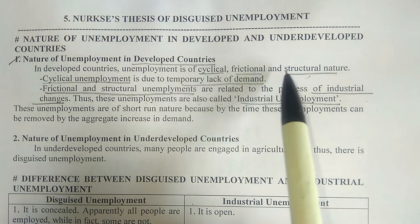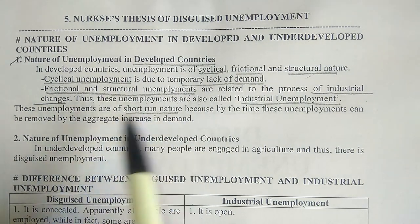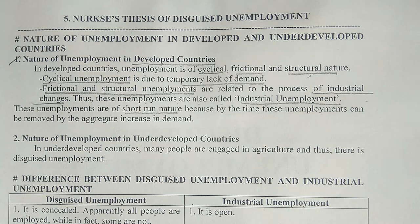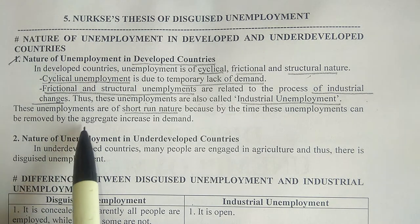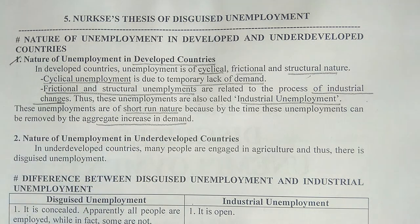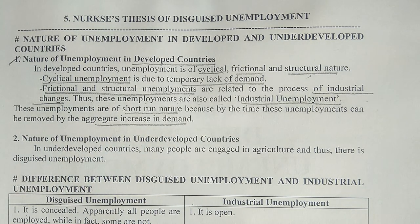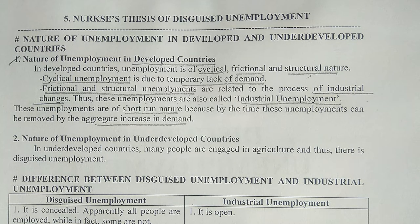Cyclical, frictional, and structural unemployment in developed countries are of short-run nature because they can be removed by an increase in demand. This increase in demand can be done quickly, which is why unemployment in developed countries lasts for a very short period.